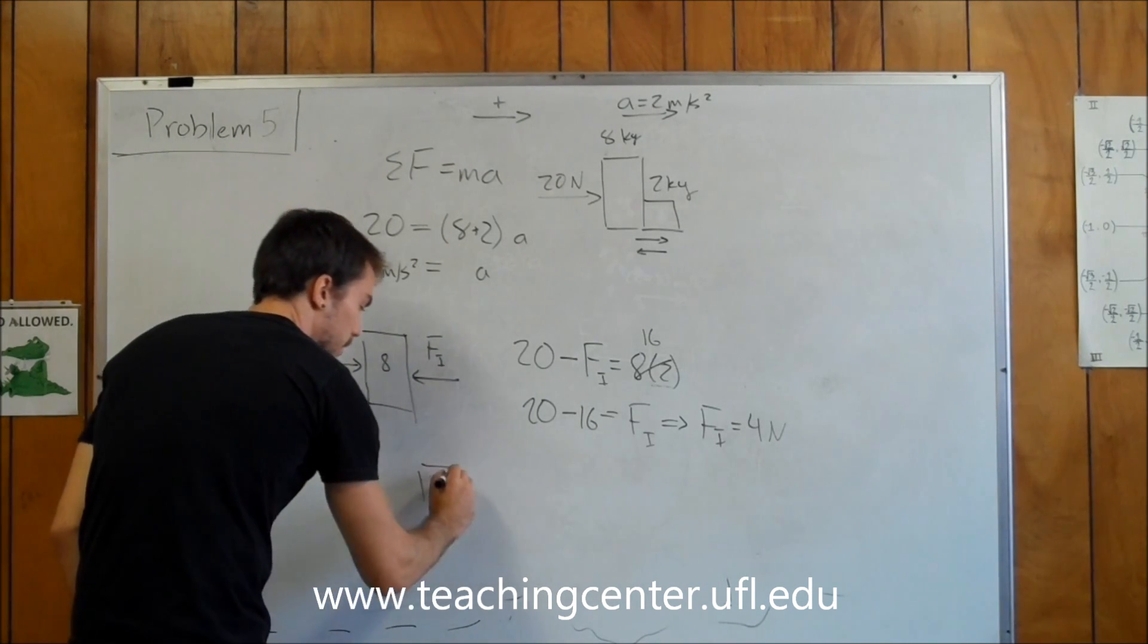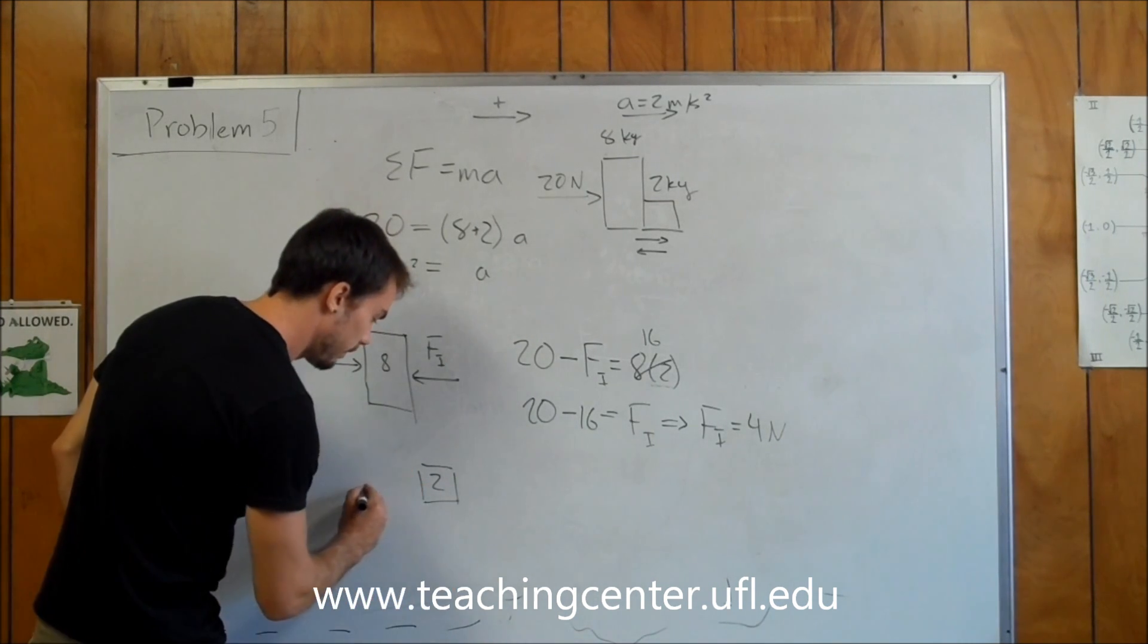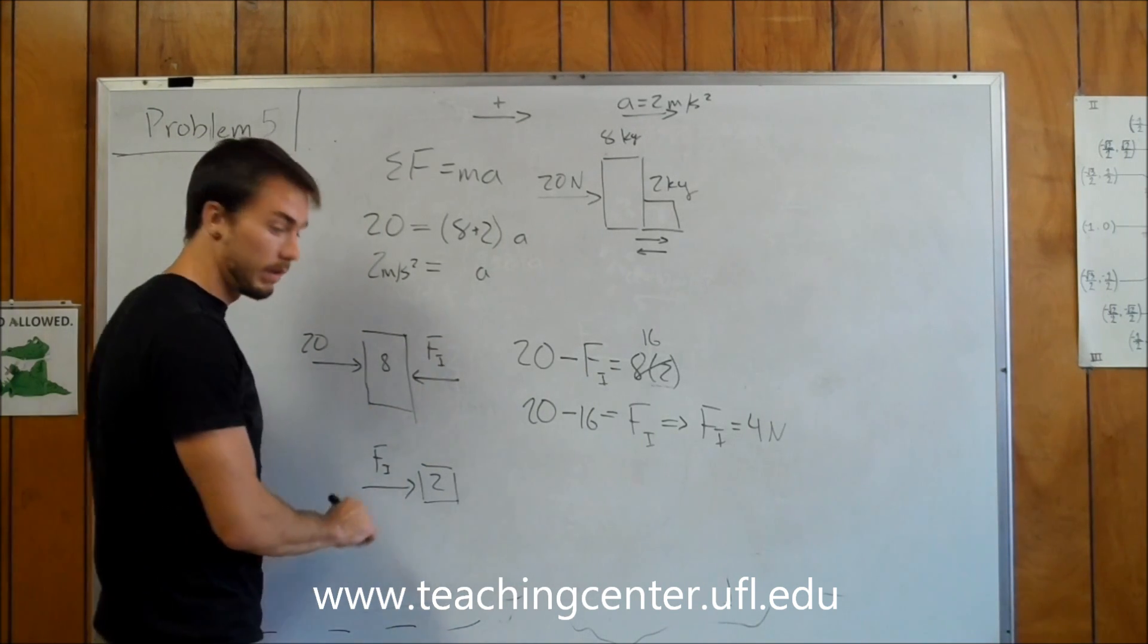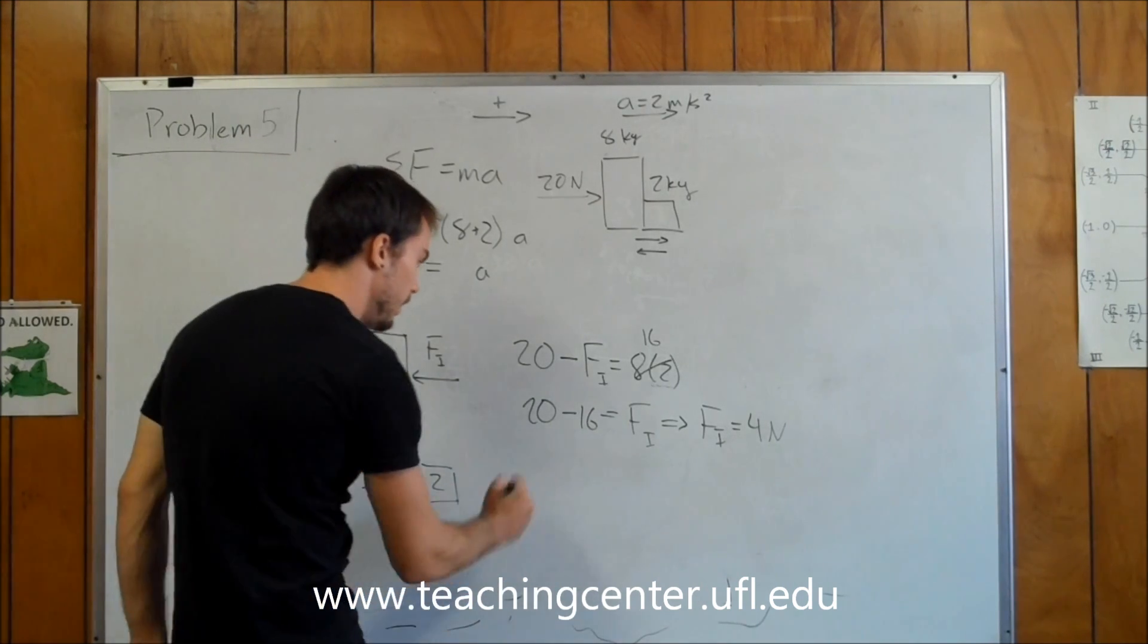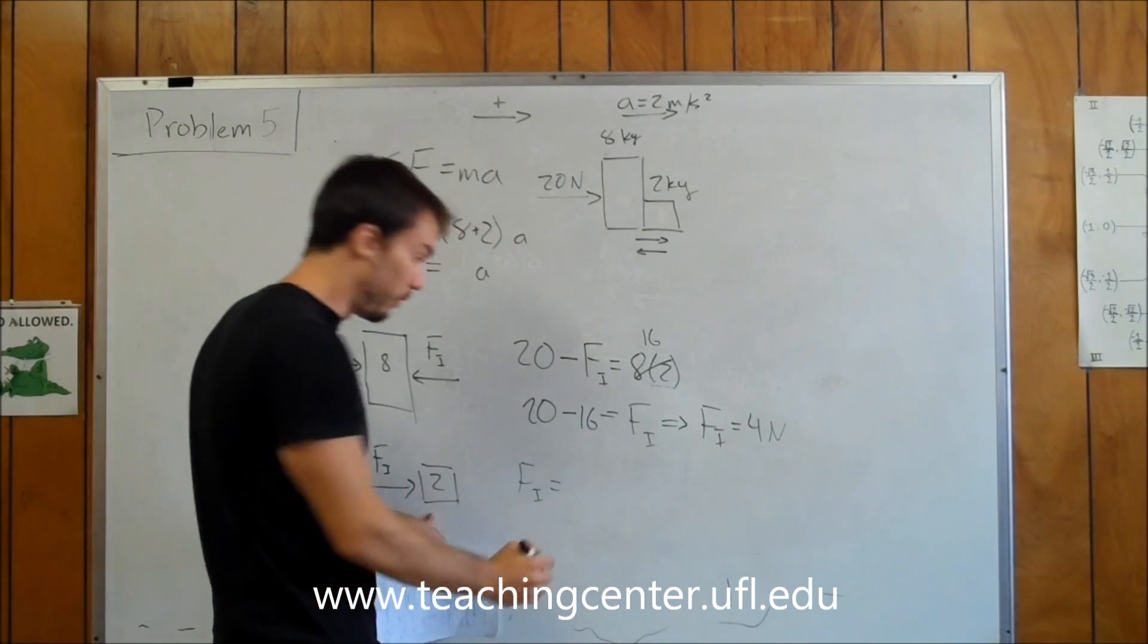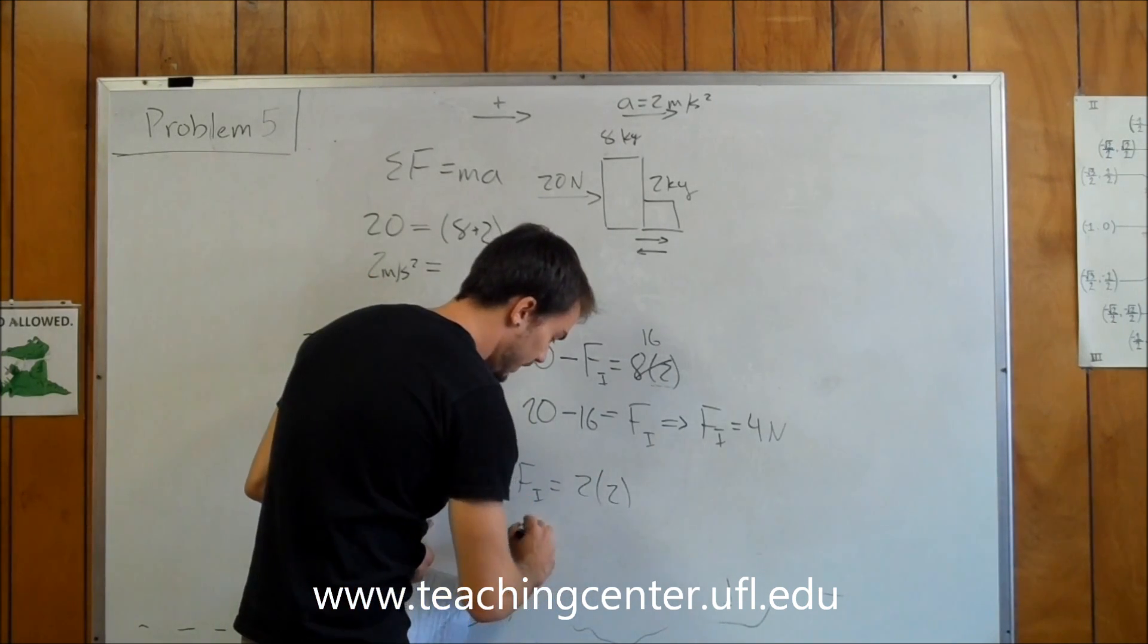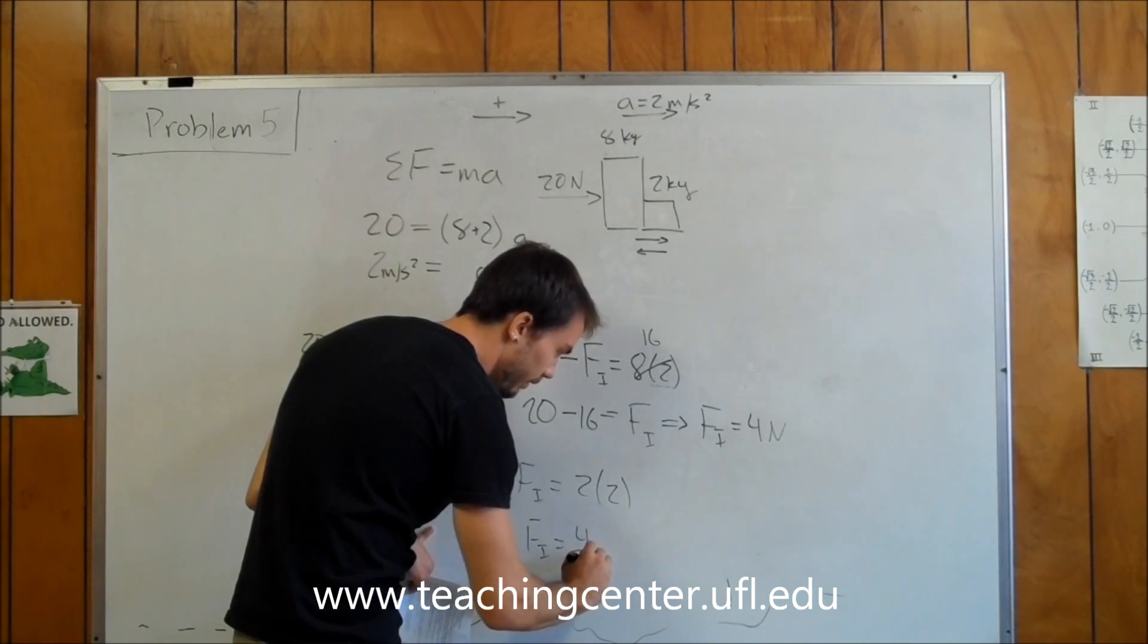You can also look at the 2-kilogram block, which is actually going to be a little bit easier, because the only force acting on this guy is the internal force. This 20 acts directly on the 8, it does not touch the 2, so it's not included in this setup or this equation, this free-body diagram. So if we do our sum of forces on this one, all we have is the internal force, and that's going to be equal to the mass of this block, 2, times our acceleration, which is also 2. And once again, we end up saying that the internal force is equal to 4 newtons.